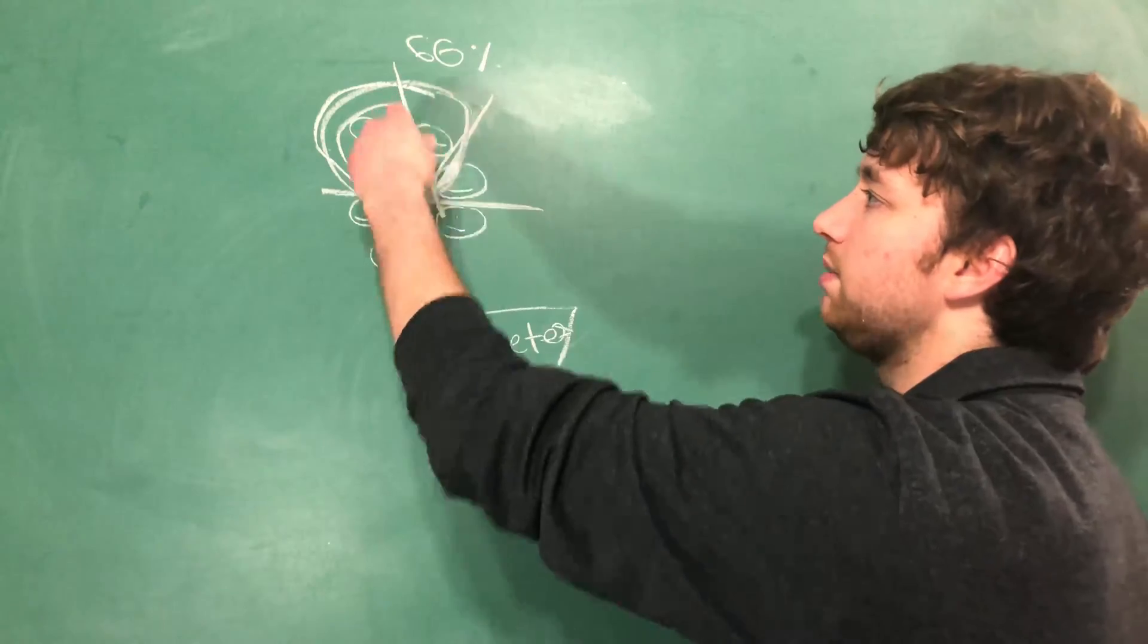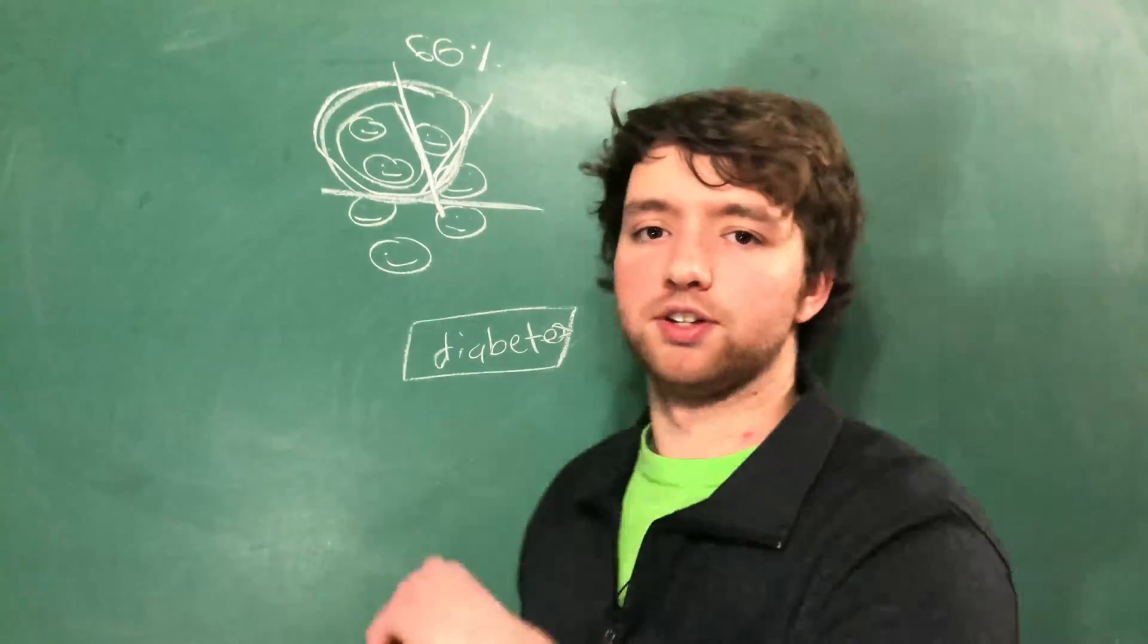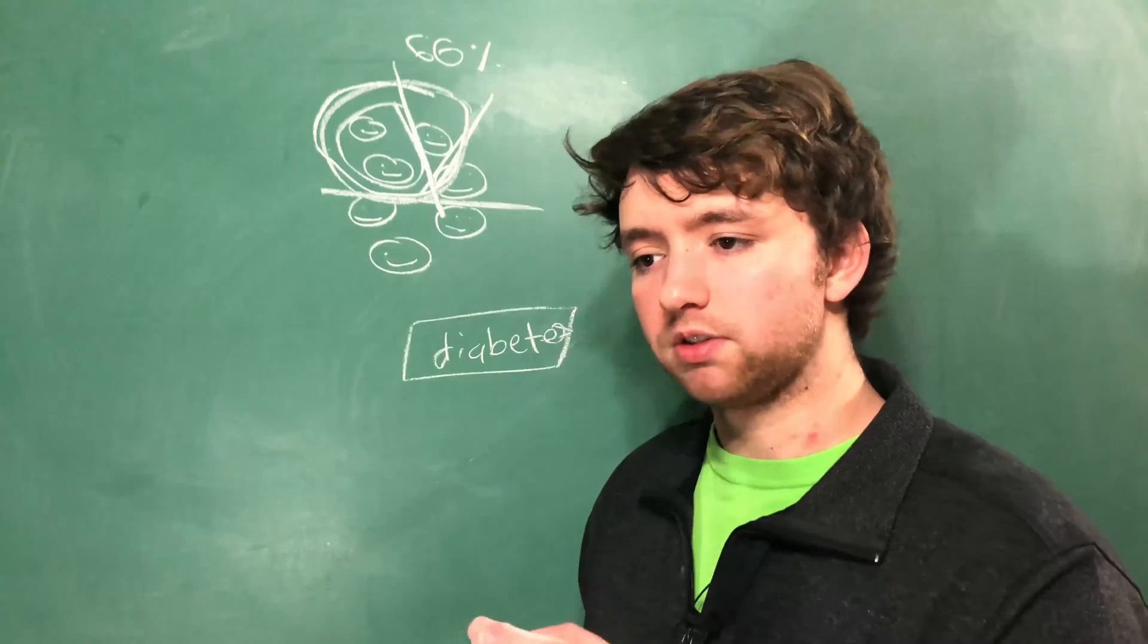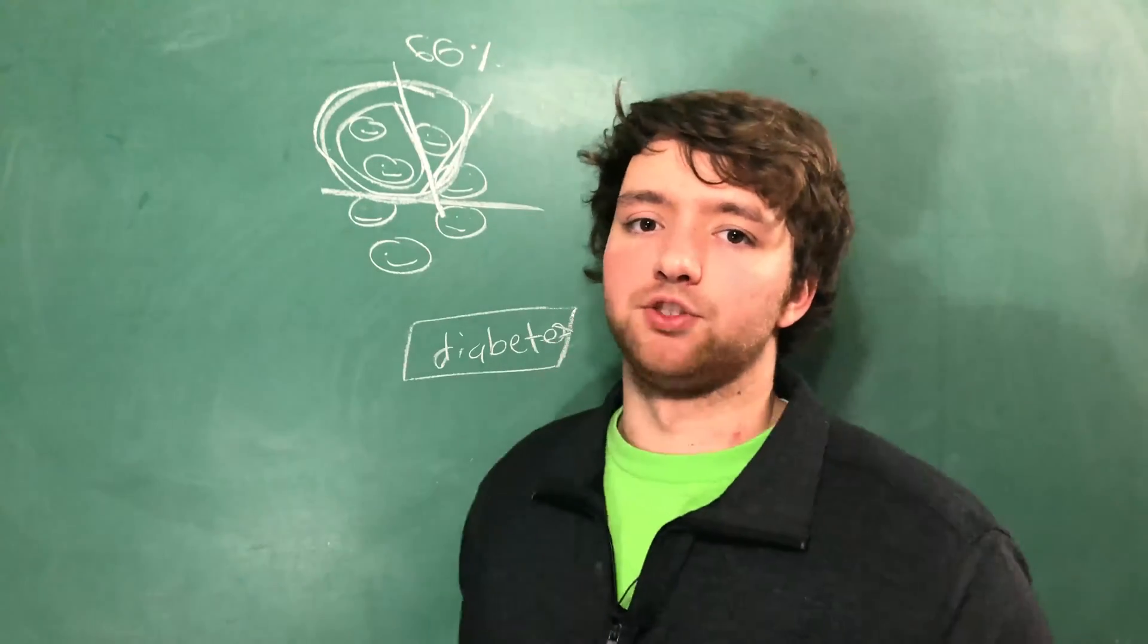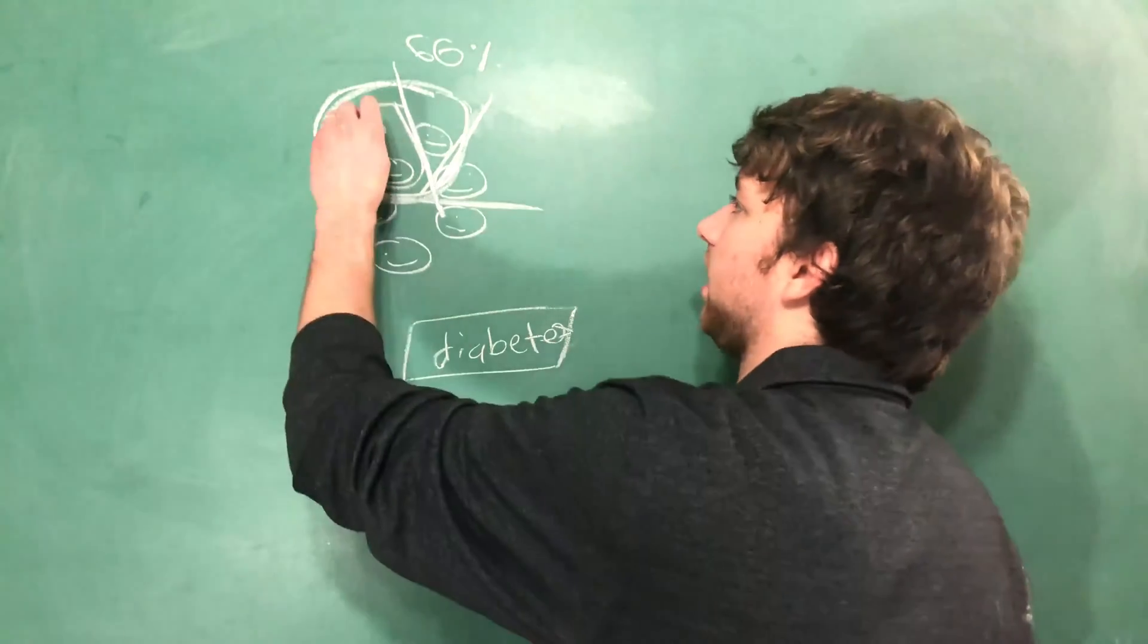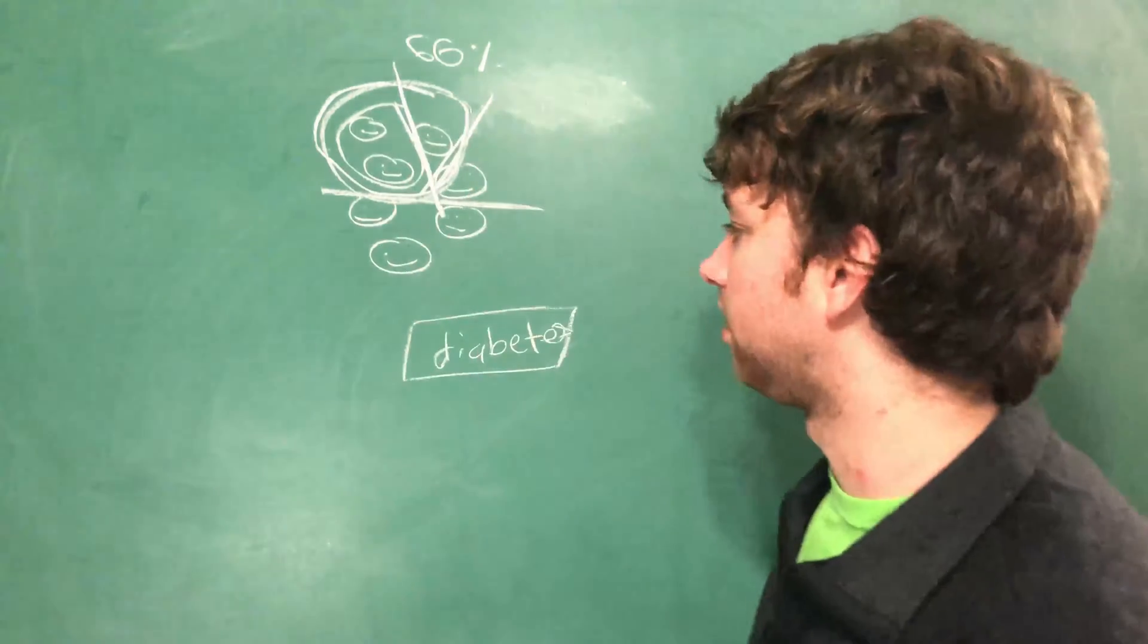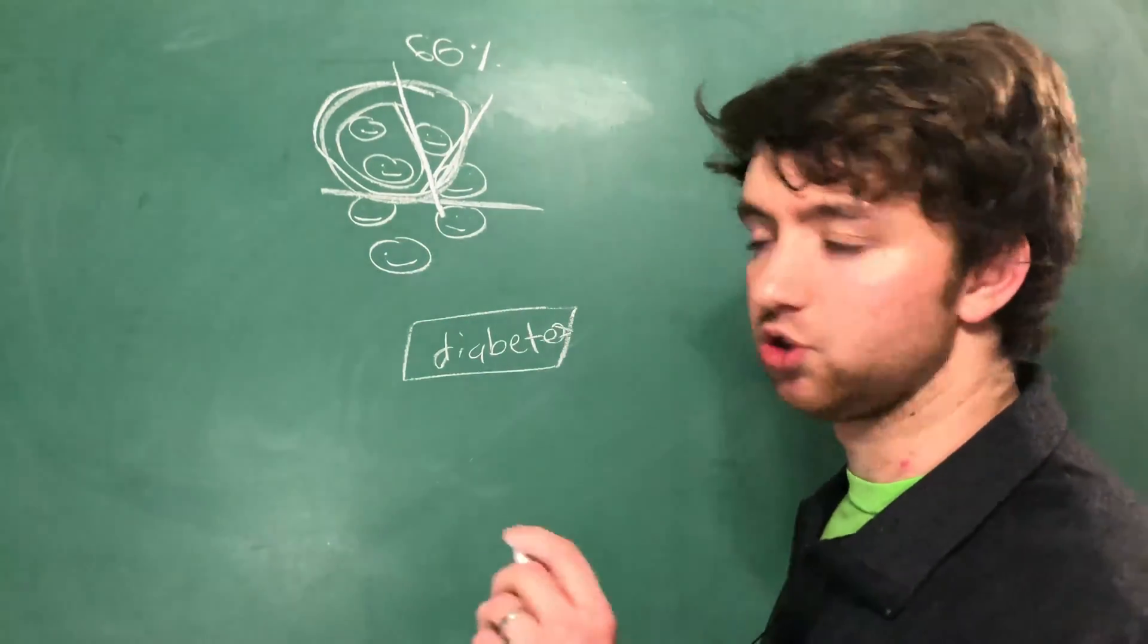We don't have any more data to differentiate these people. You can kind of consider these three people as identical in our data set. They have all the same descriptive feature values but different target feature values. These two might have diabetes and this one may not. So in that situation we do the same thing but we go with the majority.